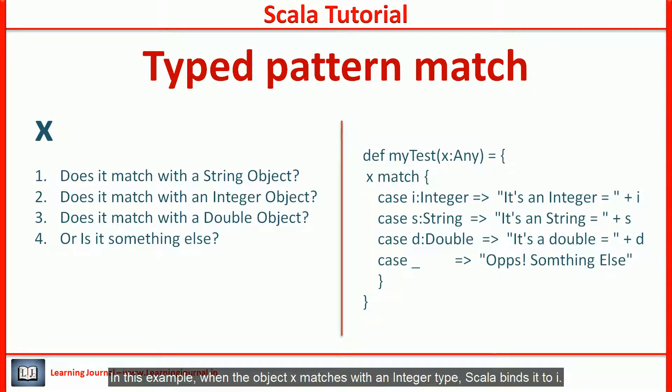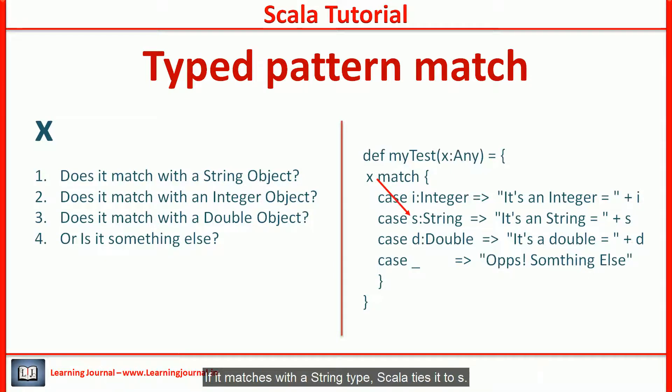Scala's pattern matching also binds the value on a pattern match. In this example, when the object X matches with an integer type, Scala binds it to I. If it matches with a string type, Scala ties it to S. This automatic binding saves you from casting X to a matching type.